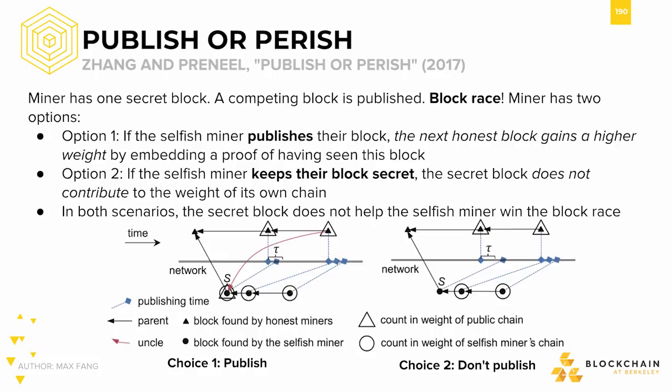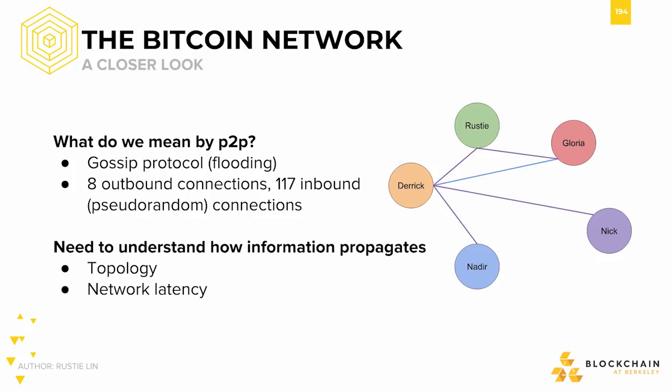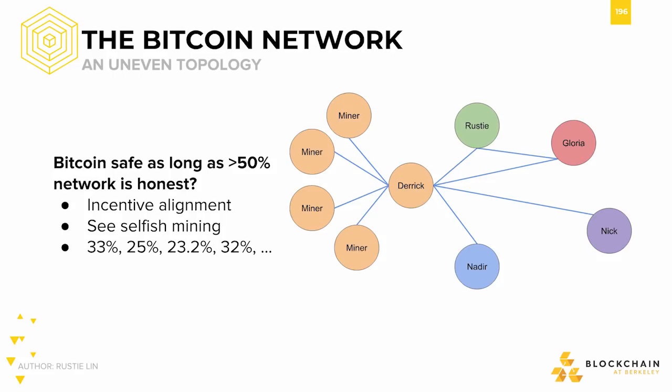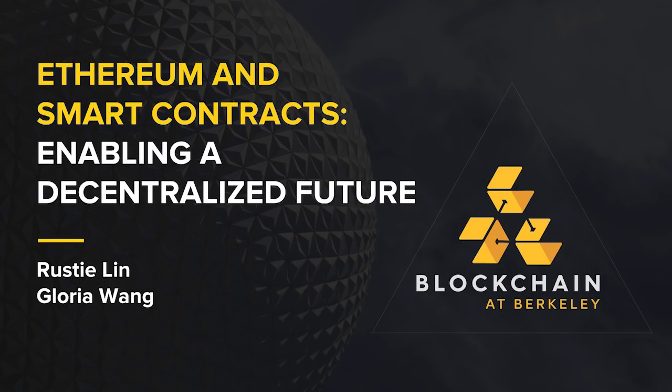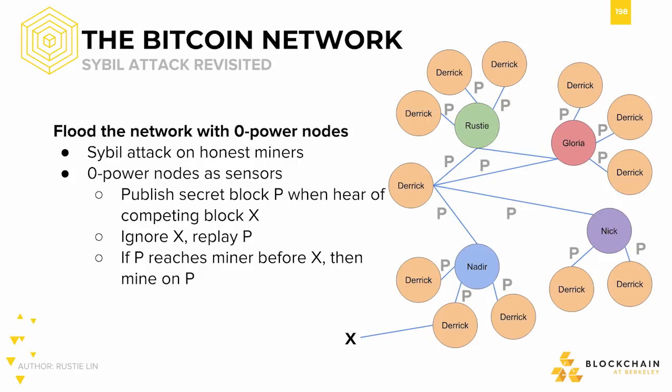We then took a look at the Bitcoin network and how attacks can be done by manipulating the topology or network latency in your favor. One could spawn nodes in order to affect the topology of the network, even though their mining power is the same, in order to attack the network. In addition, someone could have many dummy nodes trying to sense the movement of a block around the network.